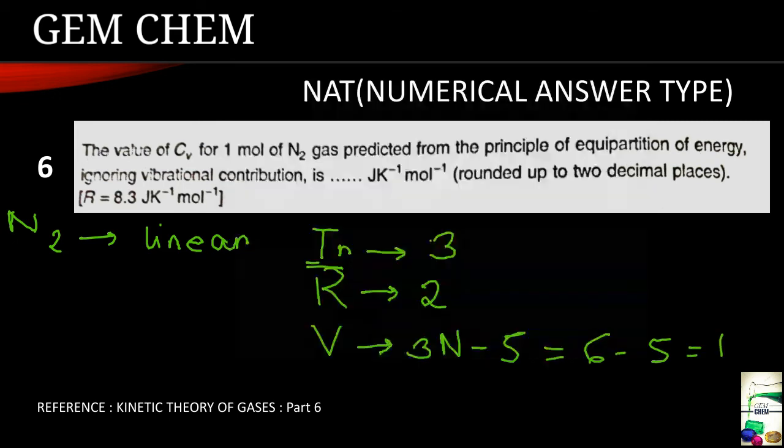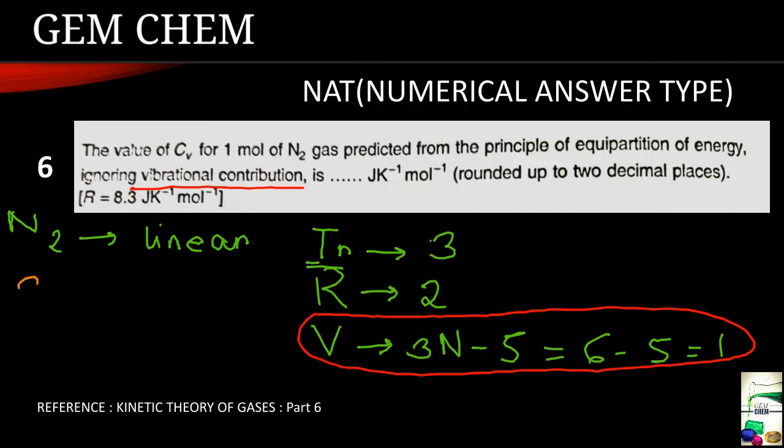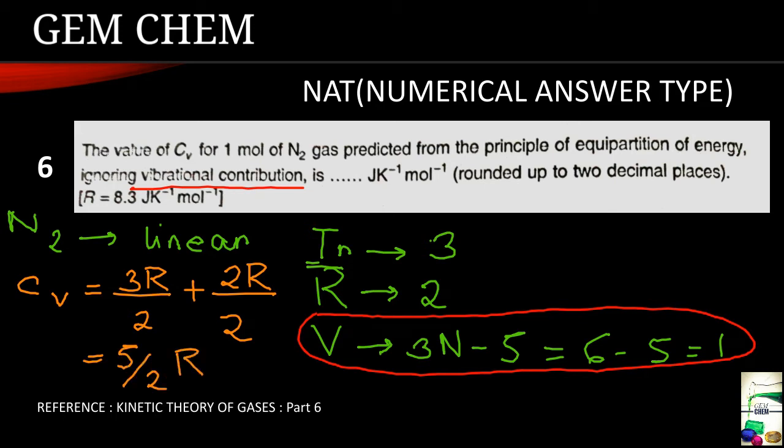And it is already told that to ignore the vibrational contribution, so we will not take this one. So ultimately our formula for CV is equal to 3R by 2 plus 2R by 2 and it comes to be as 5 by 2R. And if we calculate further the value comes to be as 20.75 and it is already told to round up to 2 decimal place. So we have already rounded up. So our answer is 20.75.